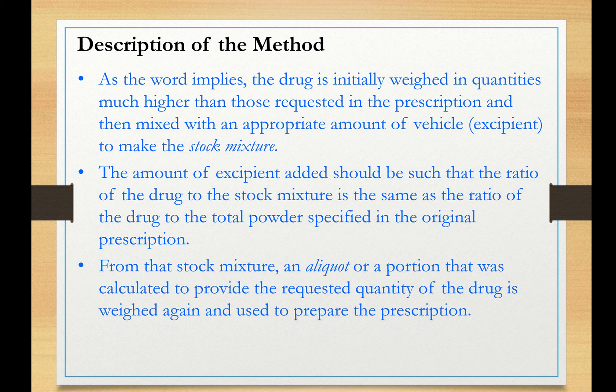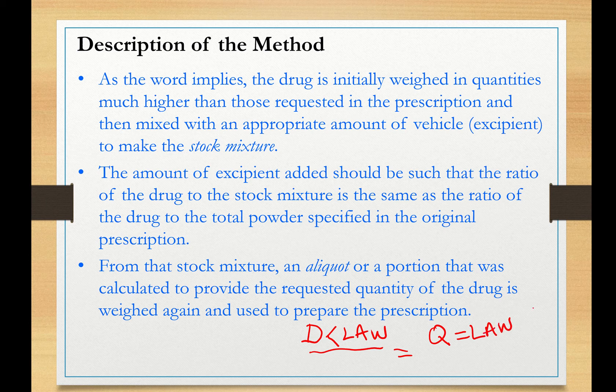Let me give you a snapshot of the method before we proceed to the detailed description. Basically, the drug amount initially prescribed is less than the least allowable weight. I am going to write the drug amount as D. And this one is less than the least allowable weight. So if you attempt to weigh directly on a balance, you are going to exceed the maximum allowable error.